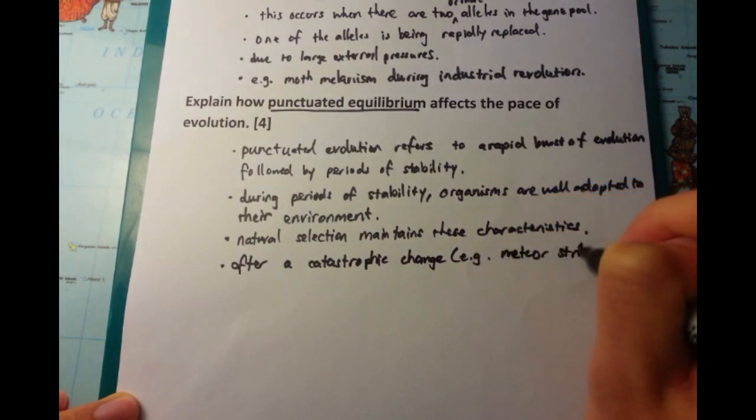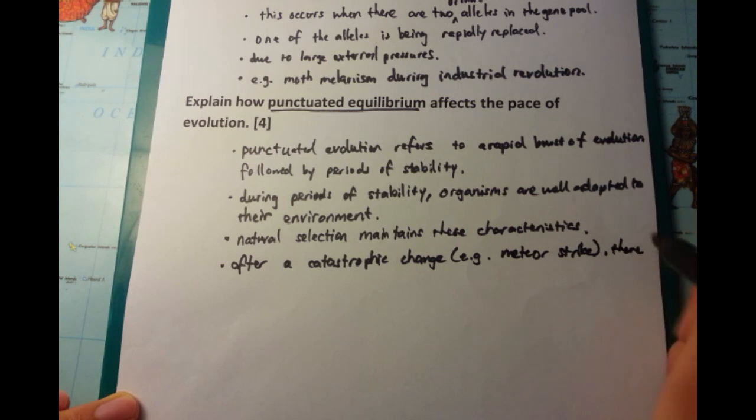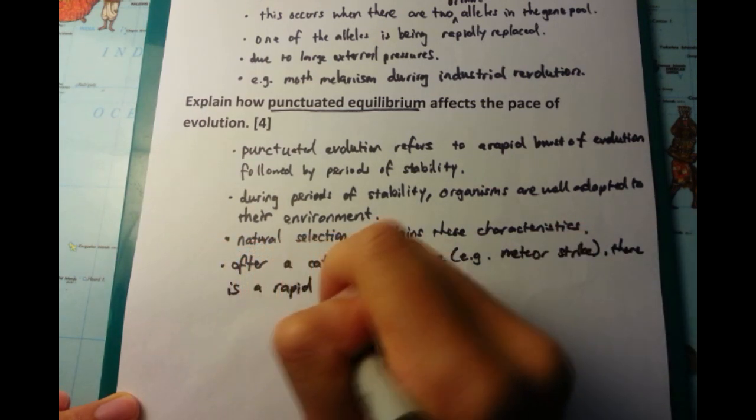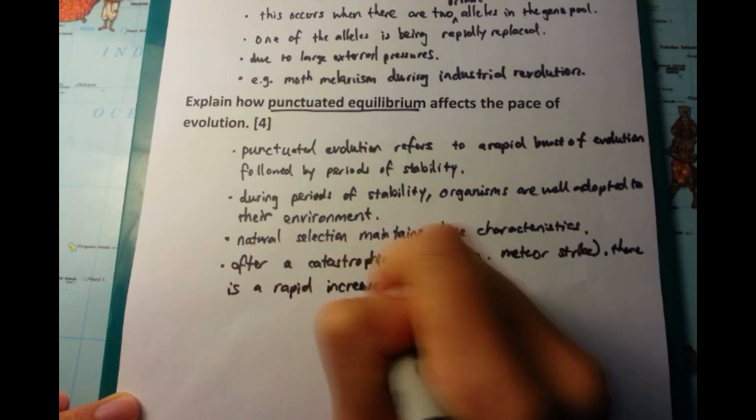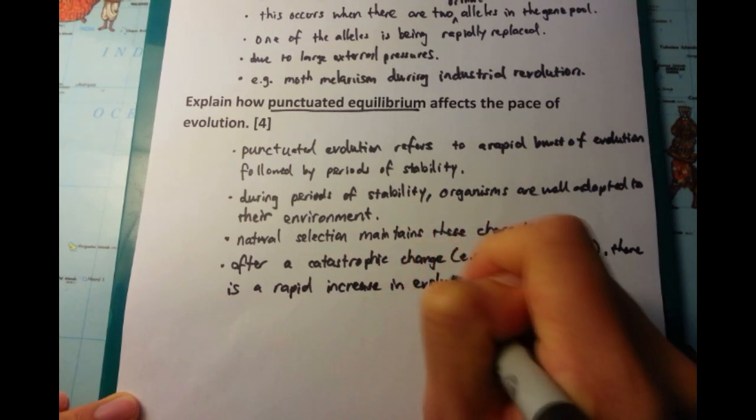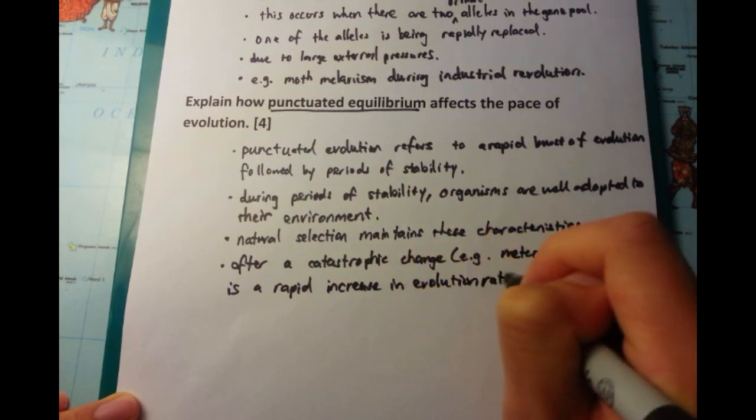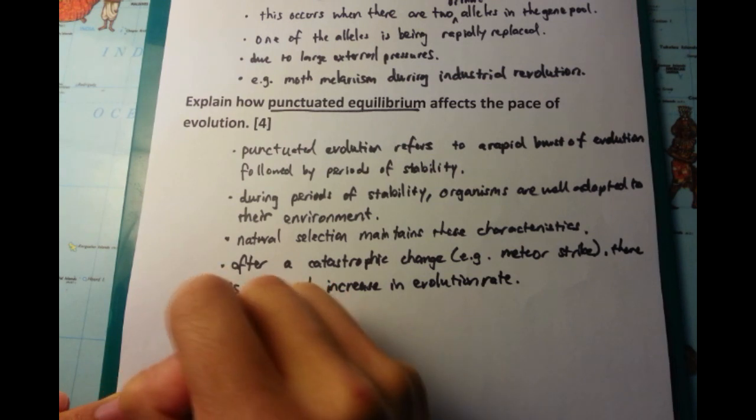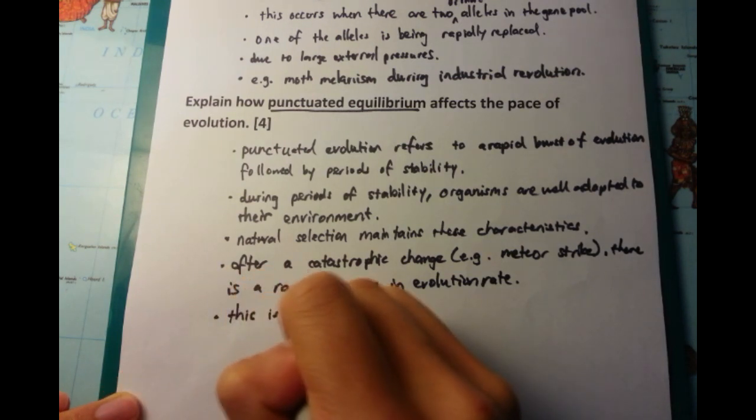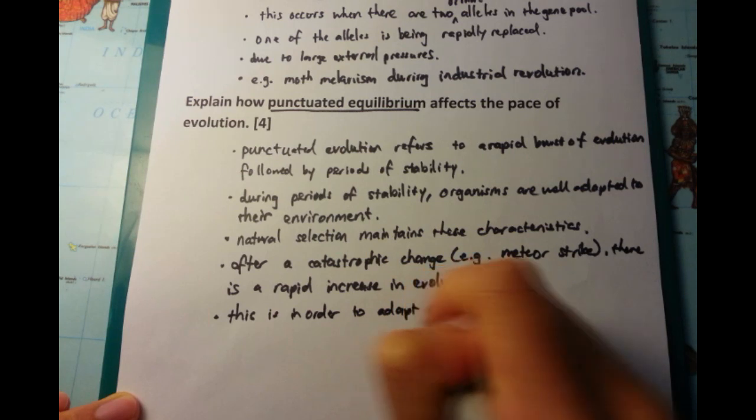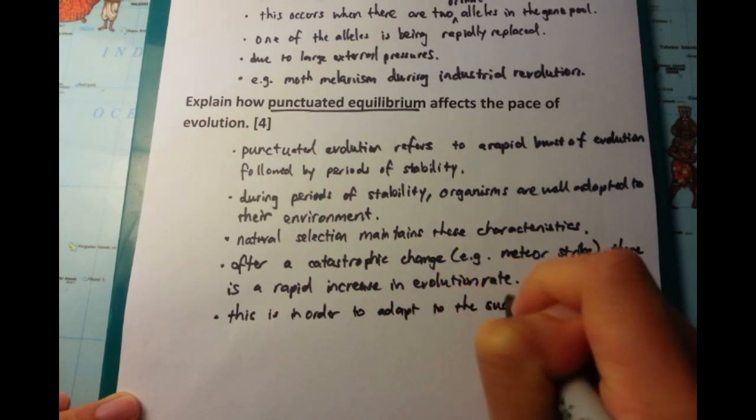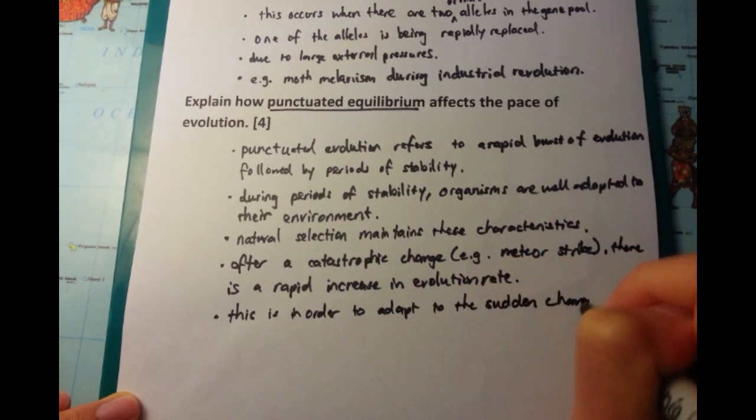Now I'm talking about the acceleration or the rapid burst of evolution. So after a catastrophic change, for example, a meteor strike I've given in this example, there's a rapid increase in rate of evolution. And this is because there is a big change in the environment. So the animals or organisms need to rapidly evolve in order to keep up with the changes.